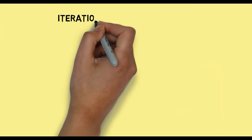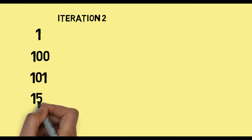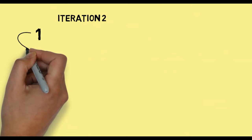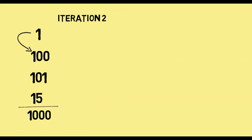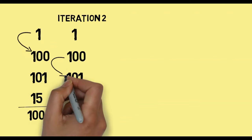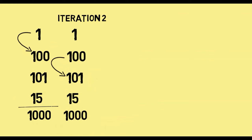Next, we start with iteration 2. We put the list in the state it was at the end of iteration 1 — 1000 was sorted. We start by comparing 1 with 100. Since 1 is smaller than 100, it doesn't change its place. Next, we compare 100 to 101. Again, 100 is smaller than 101, so it doesn't change its place.